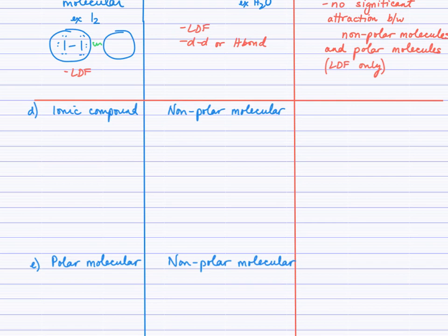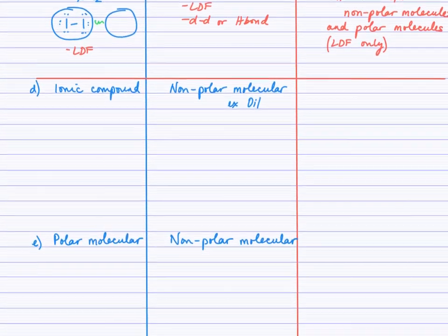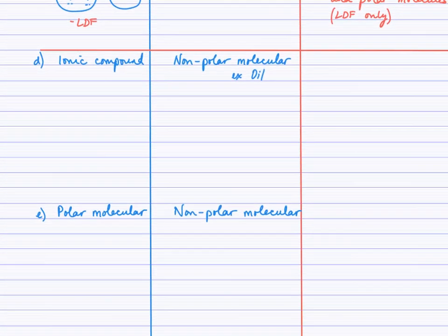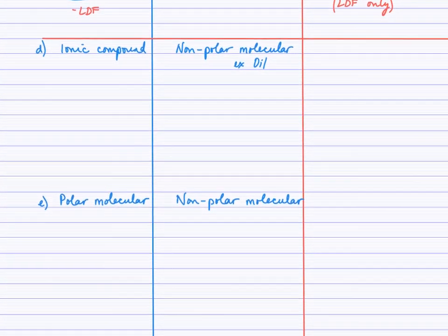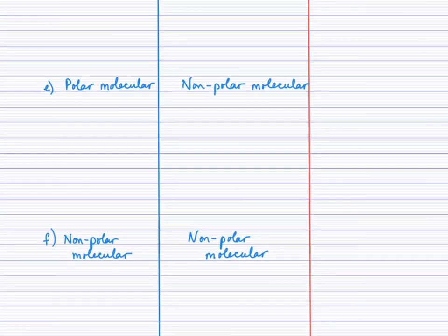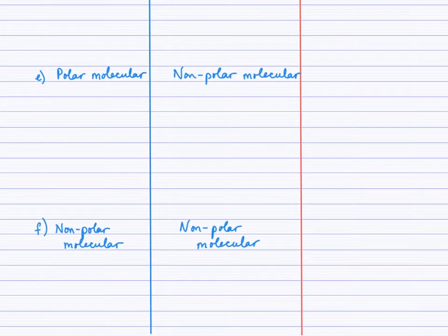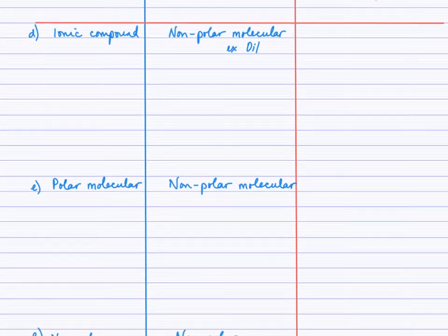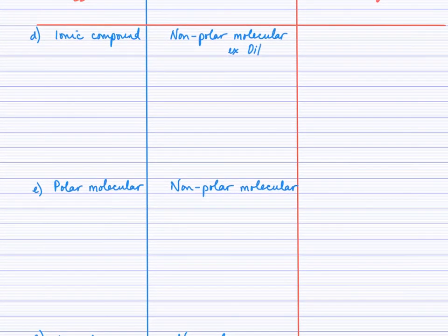If we don't have a polar molecular solvent, then we'll have a non-polar molecular solvent — examples here could be oils or greases. The next three sections of our table all have non-polar molecular solvents. Part D looks at ionic solutes in non-polar molecular solvents. E looks at polar molecular solutes in non-polar molecular solvents. And F looks at non-polar solutes in non-polar molecular solvents.